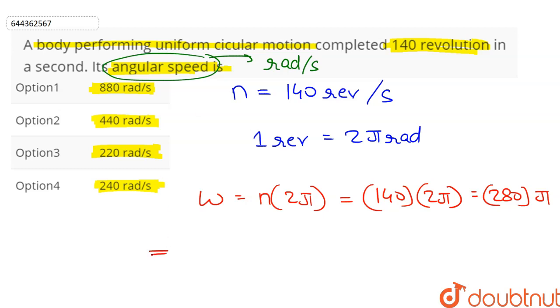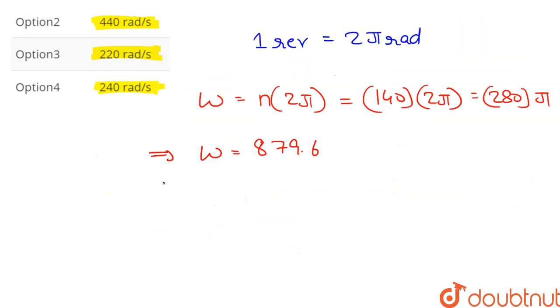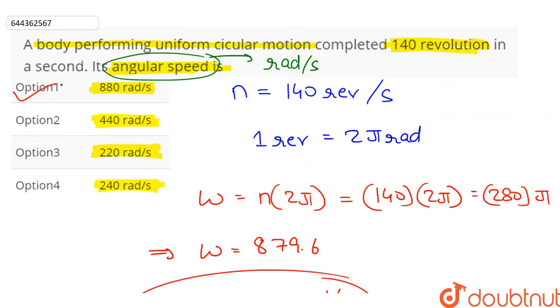Upon calculation, we get ω equal to 879.6, or let's simply round it off to 880. Therefore, ω equals 880 radians per second, and this is given in Option 1. Therefore, Option 1 is the correct answer.